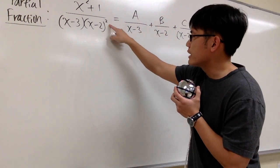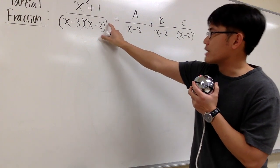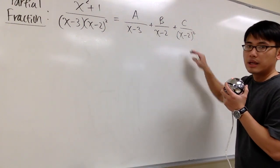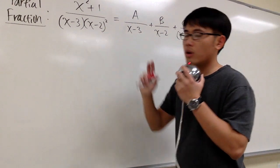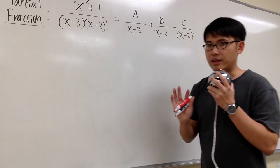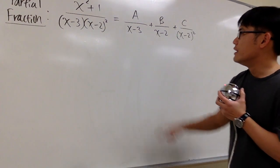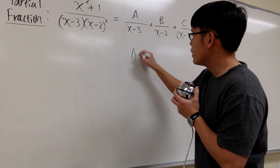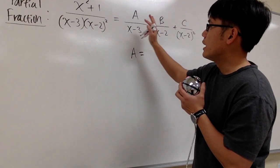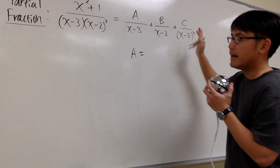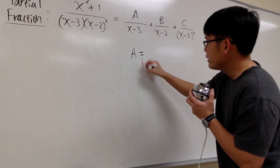And then x minus 2 to a second power, and we can use cover-up for C. Notice that these are also just linear factors, so we can make them equal to 0. So let's do it with the cover-up method. To get A, what we need to do is imagine you multiply everything by x minus 3.